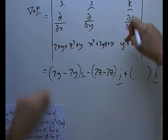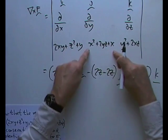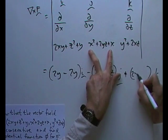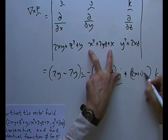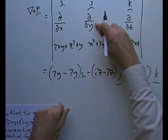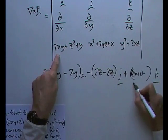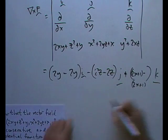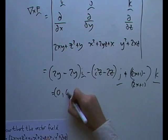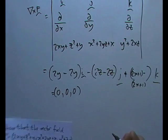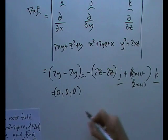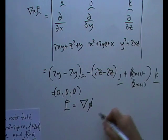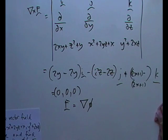And for the last one for k, the partial of this with respect to x, now there's two parts, there's a 2x plus 1, take away, and then the partial of this with respect to y, we have to put it underneath, another 2x plus 1, which means it equals 0, 0, 0, which means that F is conservative and can be expressed as the grad of some scalar field, which we'll call the potential of that.